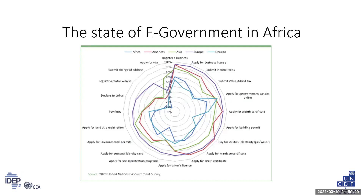E-services allow governments to offer better services to citizens and businesses, as well as promote transparency and accountability within the public sector. In 2020, all African countries but one had national portals and backend systems automating core administrative tasks to support those portals. The most common online services offered were registering a business (70% of countries), applying for a business license (65%), applying for government vacancies online (65%), and requesting a birth certificate (60%).